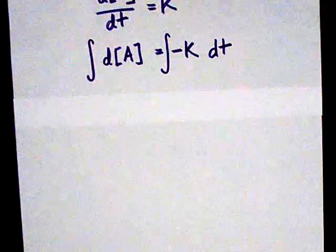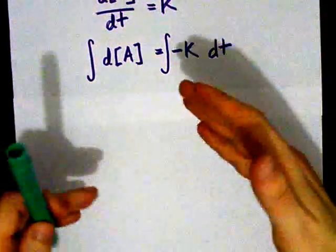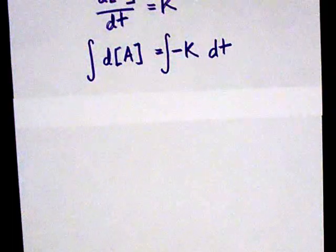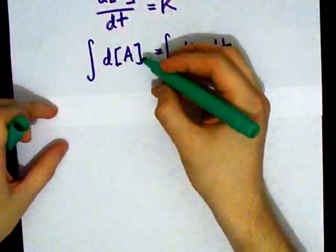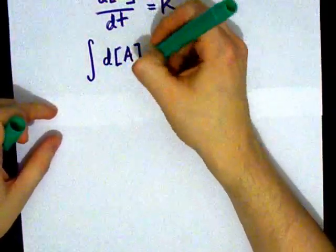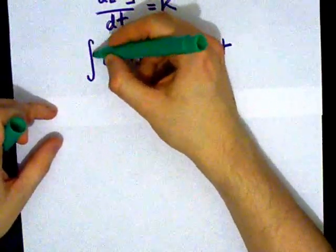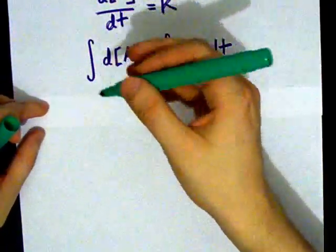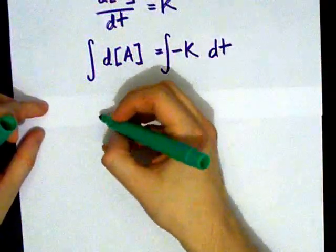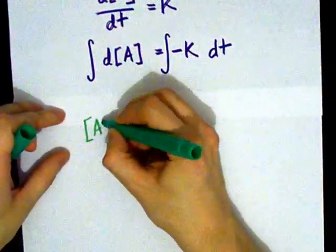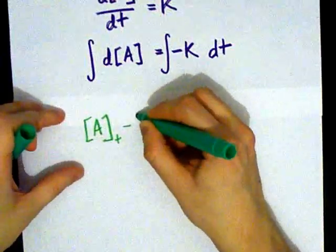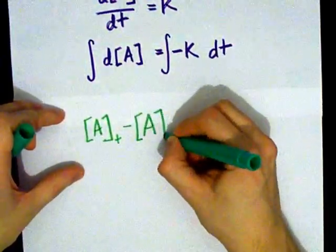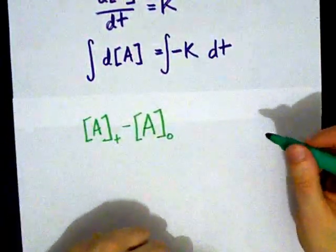Well, we're going to integrate with respect to the concentrations and the times. So, this here, this is my differential, this is my integral. There's nothing here, which means what I've integrated is simply a constant. That constant, in this case, is the concentration at time t, minus the concentration at time 0.